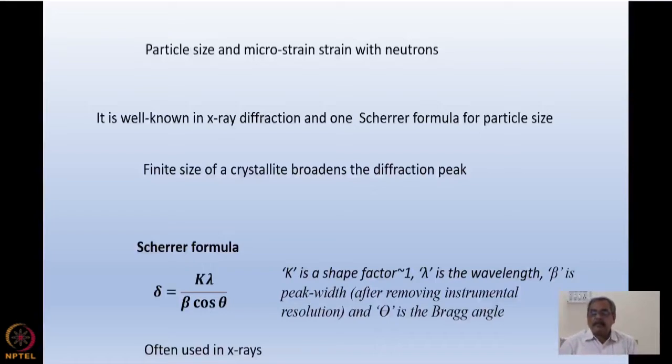All of us know that a perfect crystal Bragg peak has something called a Darwin width, which is in arc seconds. But for all practical purposes, it's a delta function. But actually, if there is a finite size of the crystal, then there is a broadening of the diffraction peak.